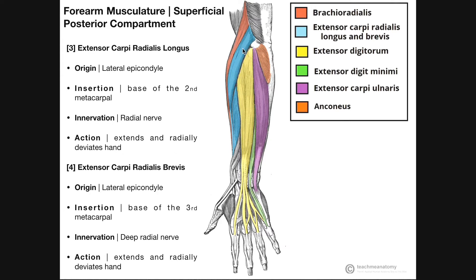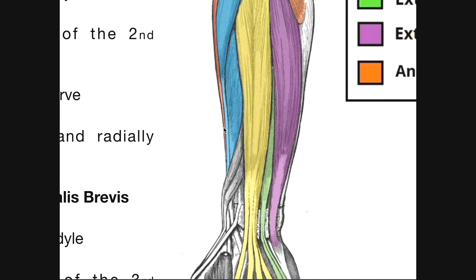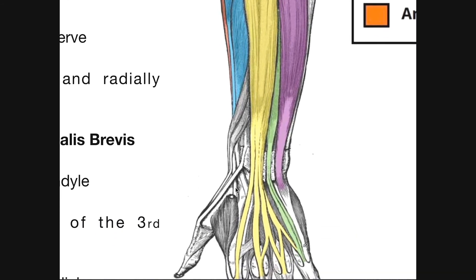The next two muscles are shown in blue: extensor carpi radialis longus and extensor carpi radialis brevis, which goes a little bit underneath the longus. Both of these muscles originate from the lateral epicondyle, the common extensor origin. The major difference really lies in their insertion. Extensor carpi radialis longus, if we follow its tendon down, is actually inserting at the base of the second metacarpal — that is your index finger.